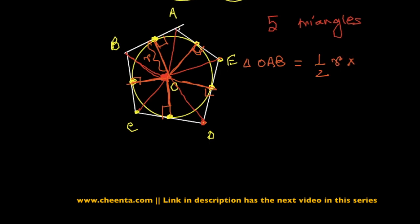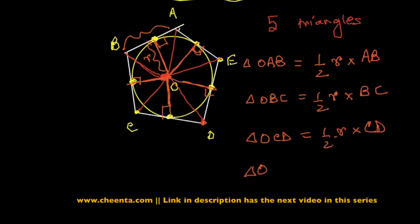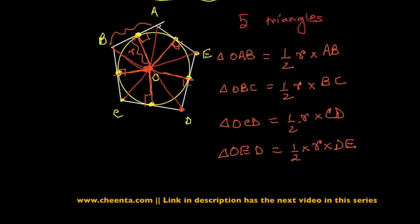Similarly, the area of triangle OBC is half times radius times BC. Triangle OCD is half times radius times CD. You can see the pattern, right? It's basically every time you multiply half with the inradius and then you just multiply it with the side, which is the base of the triangle. So finally, OAE is half times radius times AE.